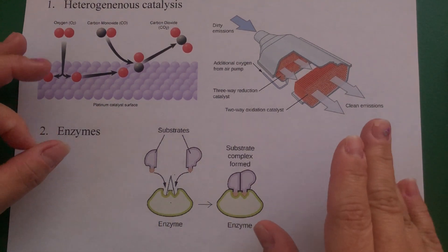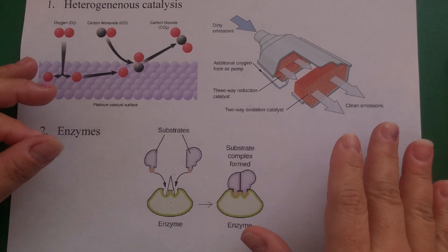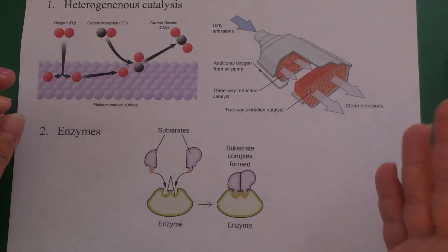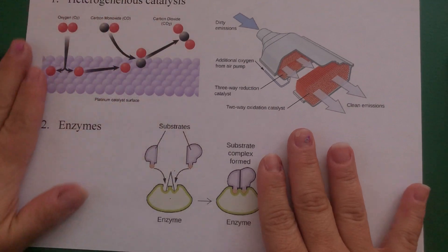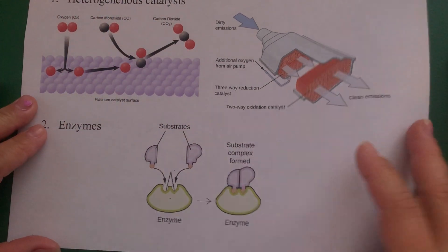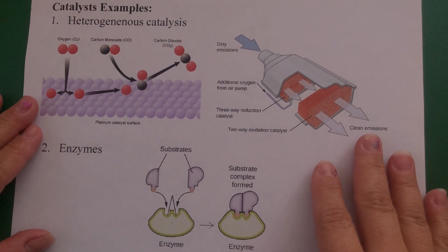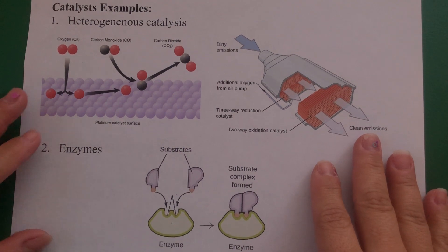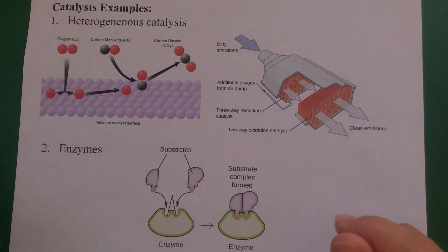Those are the ways catalysts can help. So we've talked about collision theory, activation barriers, reaction coordinates, and catalysts. Hopefully all this information will help you get through Worksheet 10. I'm also going through the answers on Worksheet 10 in a separate video.